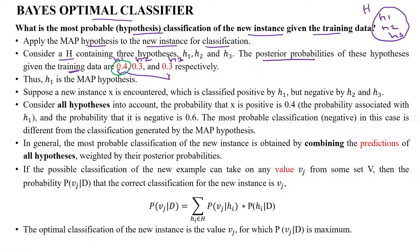So H1 is the maximal a posteriori hypothesis when considering these three individual hypotheses. Suppose a new training sample X is given to the model, which is classified as positive based upon hypothesis H1. But when combining H2 and H3, it can be classified as negative, because considering all hypotheses together, the probability that X is positive is only 0.4.